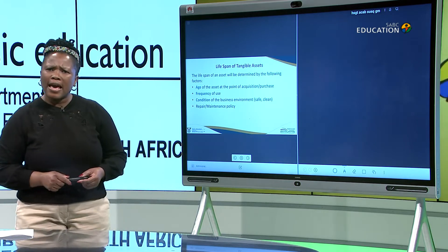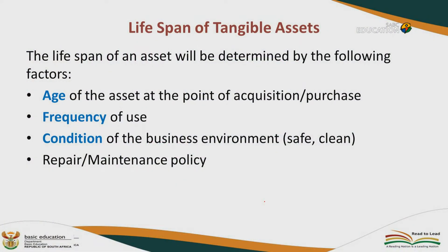Now I'm going to take you to the lifespan of tangible assets. The lifespan of tangible assets is determined by the following factors. First, the age of the asset at the point of acquisition — if you buy a new asset, it will last longer than a secondhand asset. It is safer to buy assets new because you can better predict and work out their lifespan.